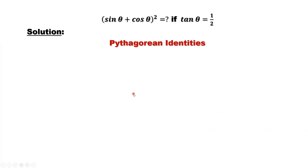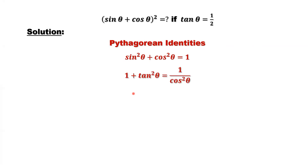Here are the important Pythagorean identities. Sine theta squared plus cosine theta squared equals one. One plus tangent theta squared equals one over cosine theta squared.